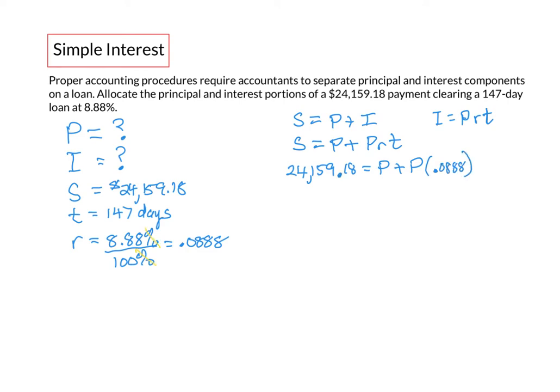For time we see that it's given in days. The problem is our rate is per annum or per year and we have to make sure that our time and our rate are expressed in the same time period. So we have to convert days into years. We do that by dividing by 365 because there's 365 days in a year. We can substitute that in here, 147 divided by 365.